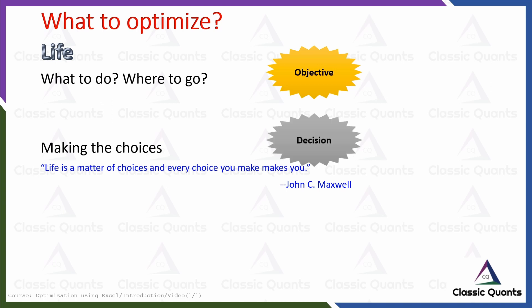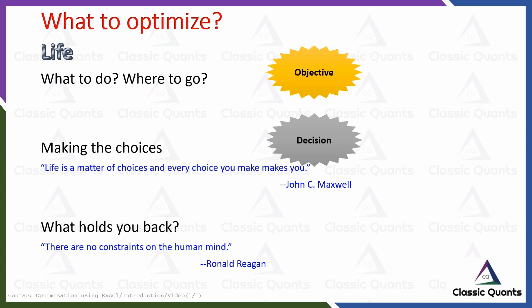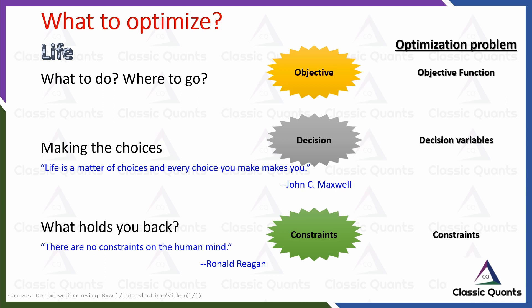That is another key point — making decisions. Finally, you or I perhaps cannot make decisions without limits; there is always something that holds you back. Unlike the human mind, where some say there are no constraints, in life there are always constraints — decisions we can make are always constrained by certain things. Drawing this analogy, we can say that an optimization problem will also have some kind of objective, decisions, and constraints.